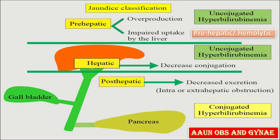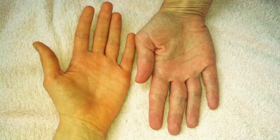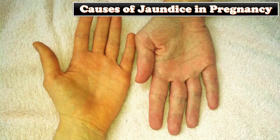Jaundice can be pre-hepatic or hemolytic in nature, in which pathology occurs prior to the liver. It can be hepatic or hepatocellular, in which the pathology is located within the liver. Or it can be post-hepatic or cholestatic, in which the pathology is located after the conjugation of bilirubin in the liver.